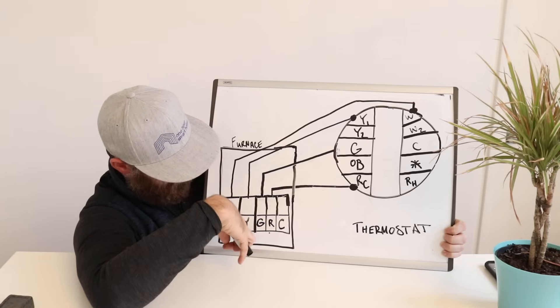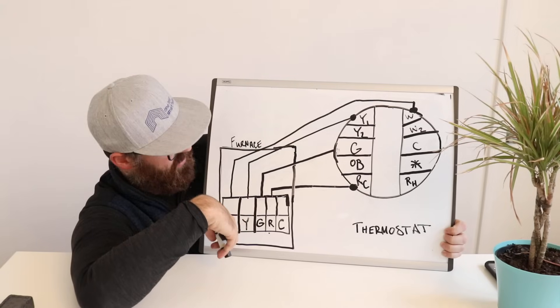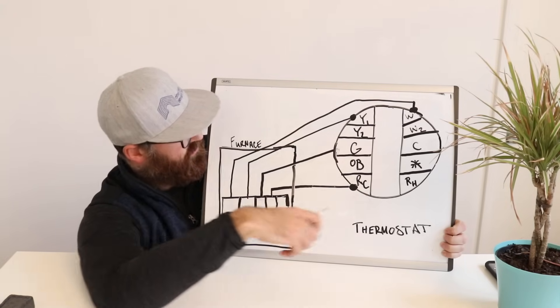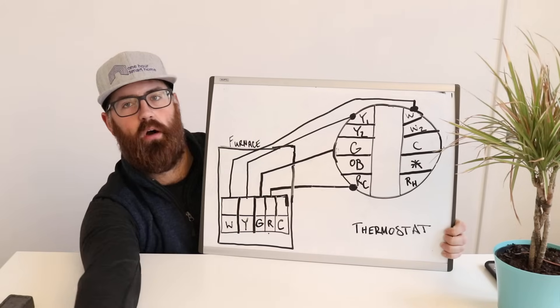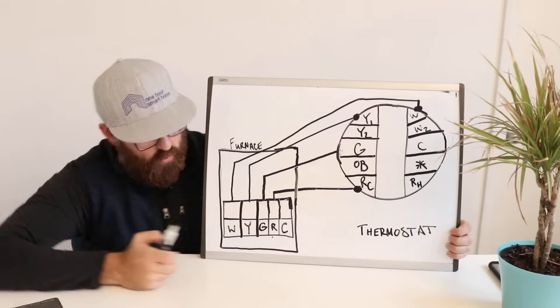And last but not least, you're going to have W, which is your heating wire, going from a W in your furnace to a W on the thermostat. That's typical wiring.